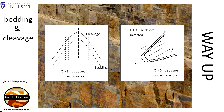The diagram on the left hand side shows this relationship. On this fold the beds are the right way up on each fold limb, and on each fold limb the cleavage has a greater angle of dip than the bedding.